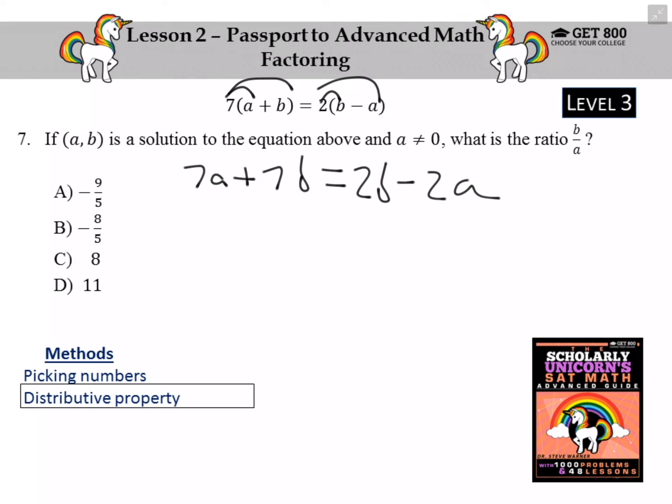Now what I want to do is get all the A's to one side of the equation and all the B's to the other side of the equation. So let me add 2A to each side of the equation to get 9A. And I'm going to subtract 7B from each side of the equation to get negative 5B on the right.